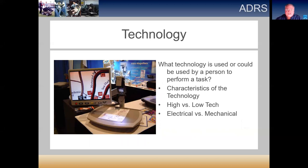The final part of the system is the technology we're going to use. We want to know what technology is currently being used and what other types might be available. It's always easier to purchase something off the shelf if we can find something that works as-is, can be used differently than designed, or can be modified. For electronic devices, we consider power requirements and battery life. High versus low tech is another consideration, since a large percentage of people are technophobic — they don't like to use unfamiliar technology — so we look at their comfort level with different types of technology.